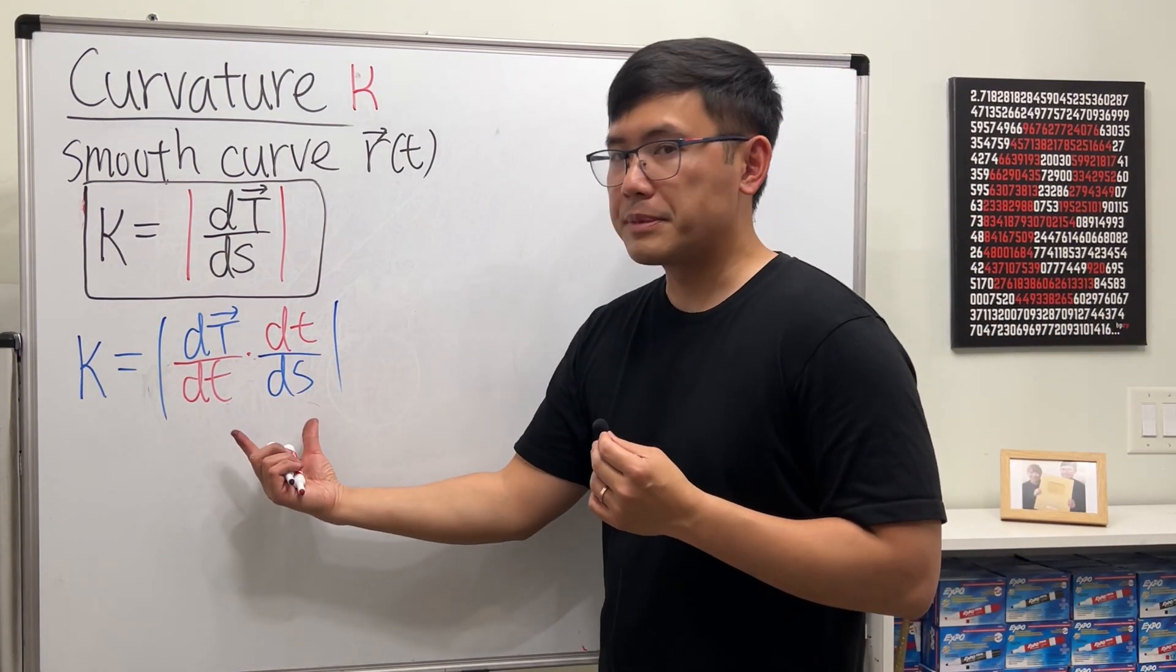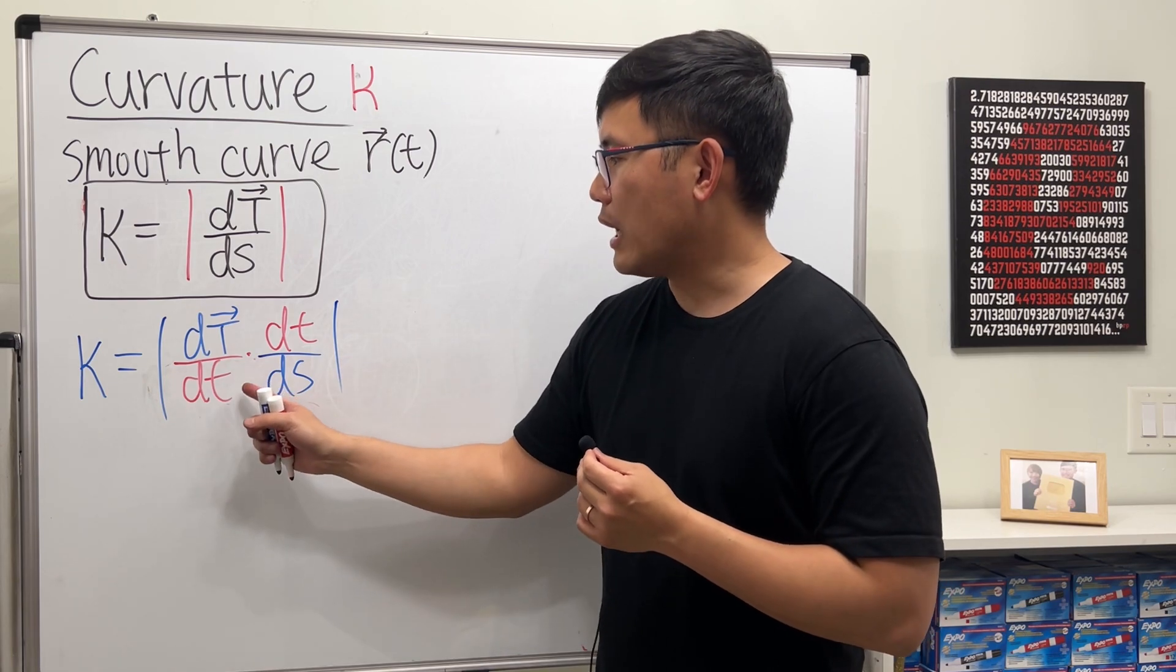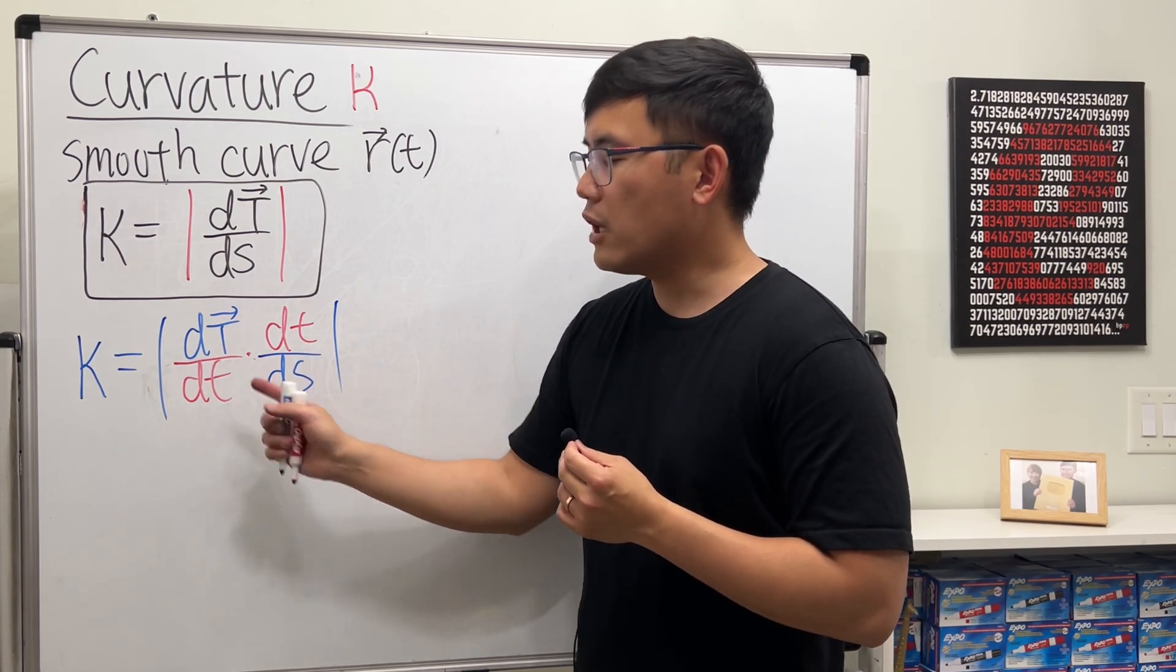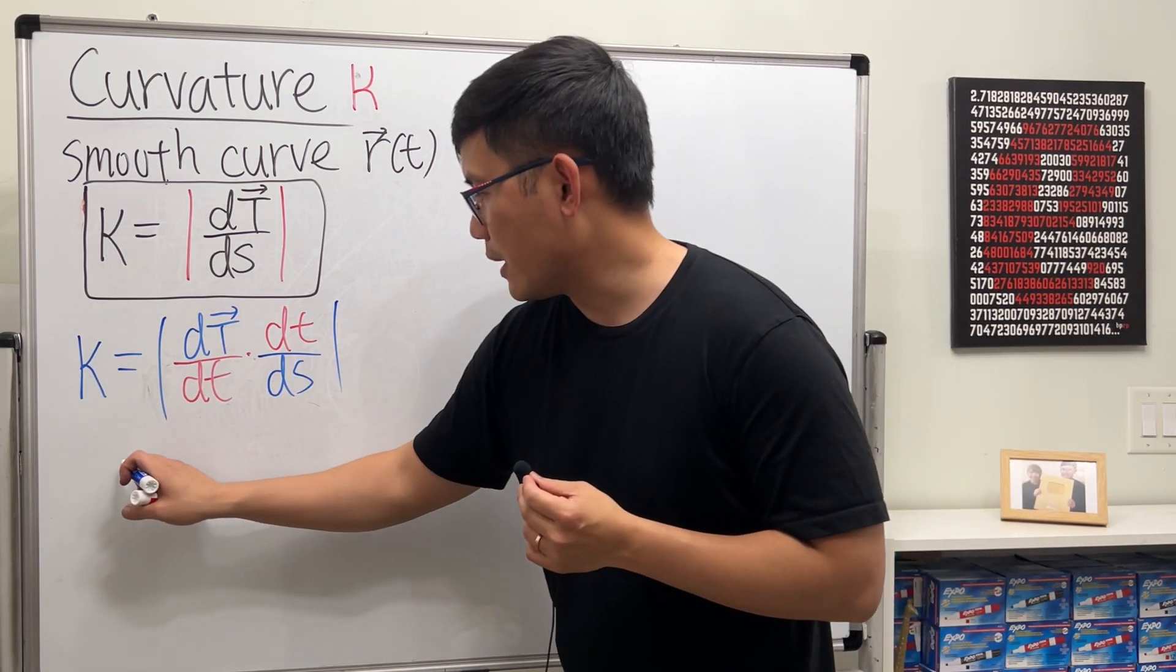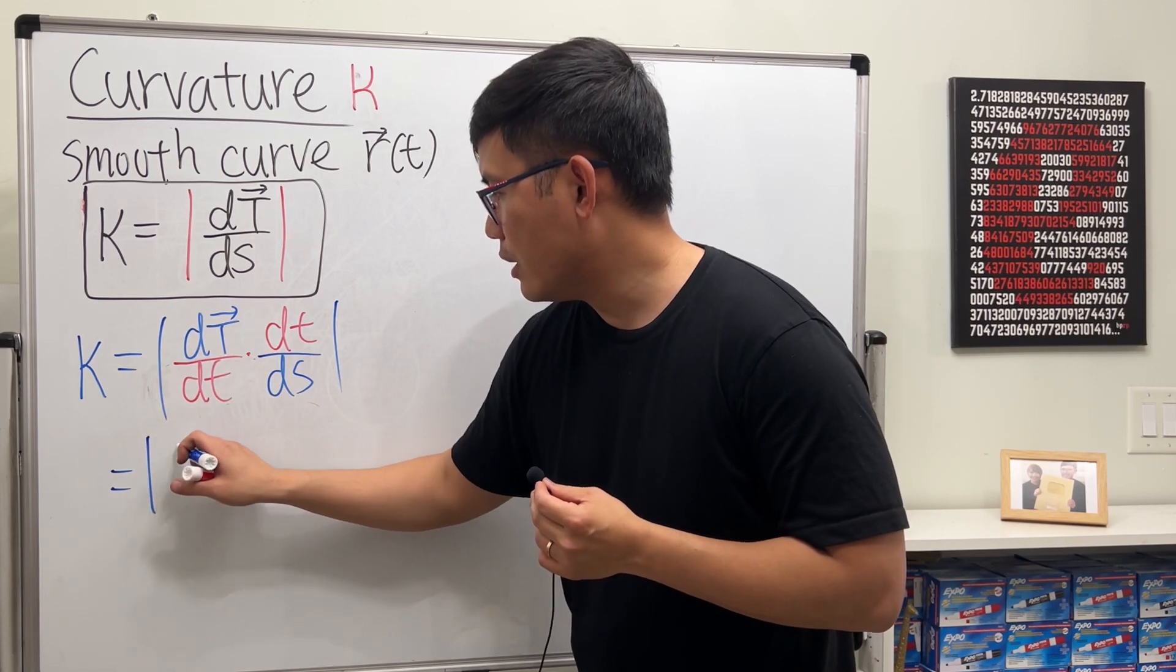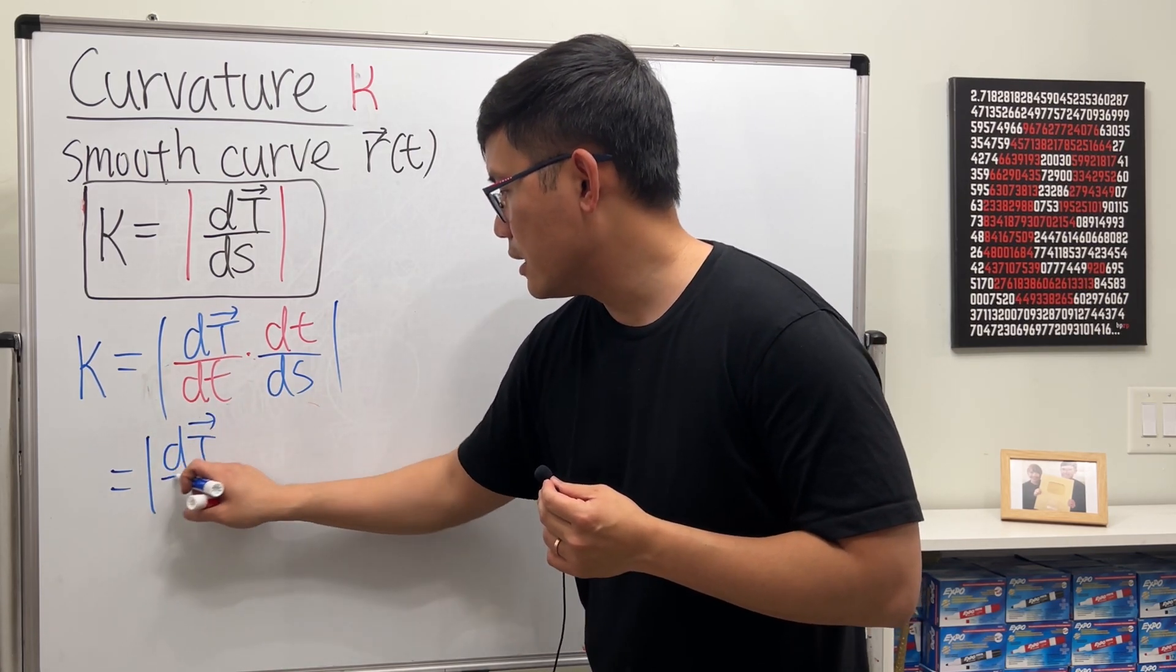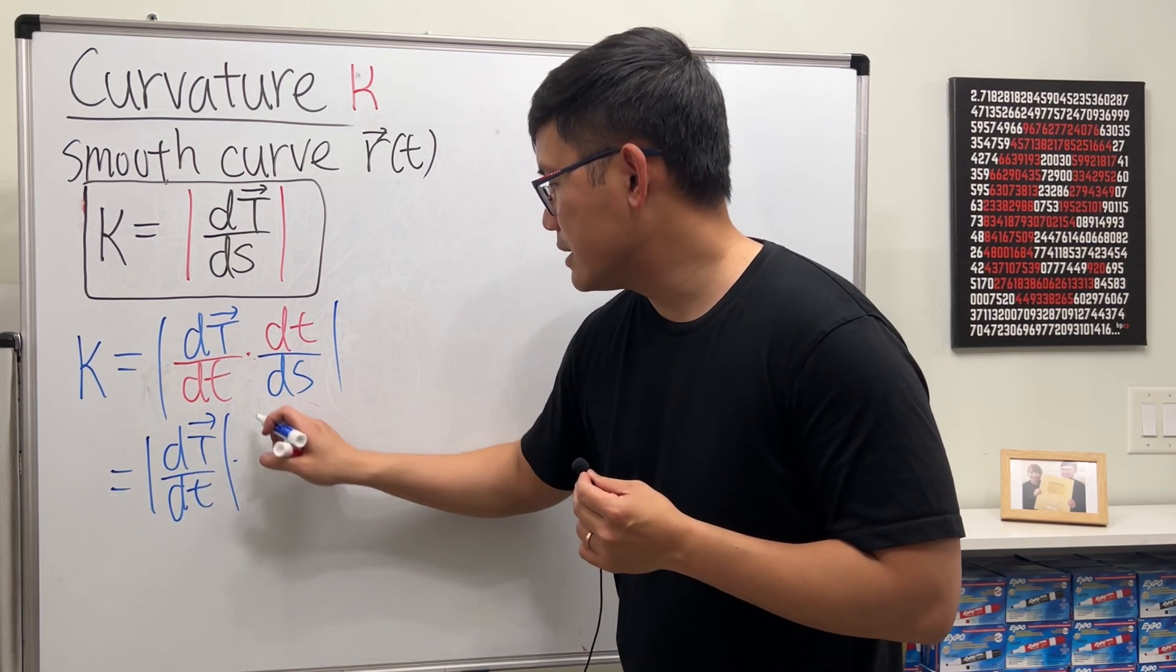Of course this is not the same as that. Don't worry, all we have to do is multiply by dt here and then divide it by ds here. This is legitimate because we are doing the chain rule. At the end, let's still have the absolute value. Now, the absolute value of a product is the same as the product of the absolute values, so we can take the magnitude of this thing and then times the magnitude of that.